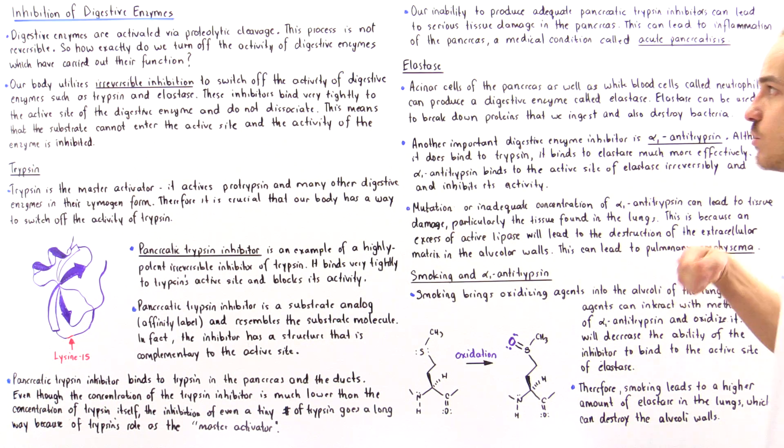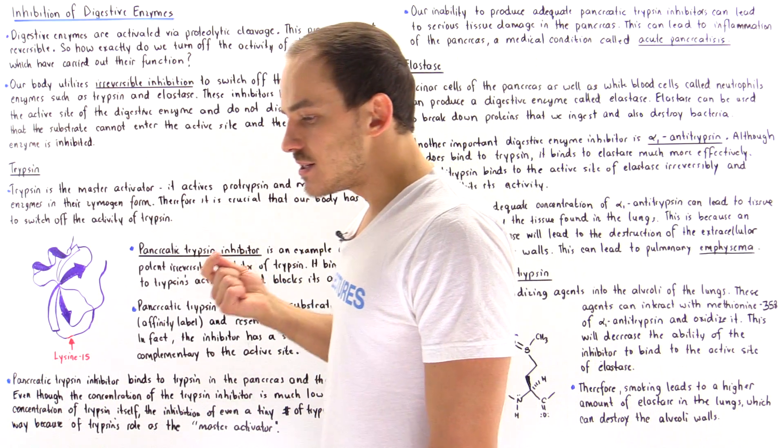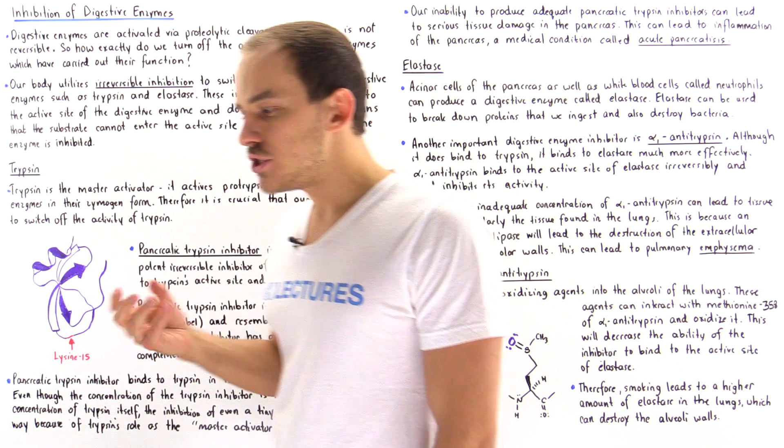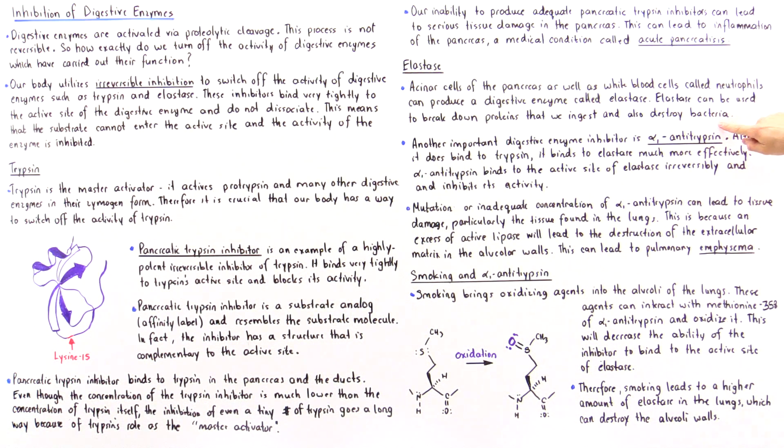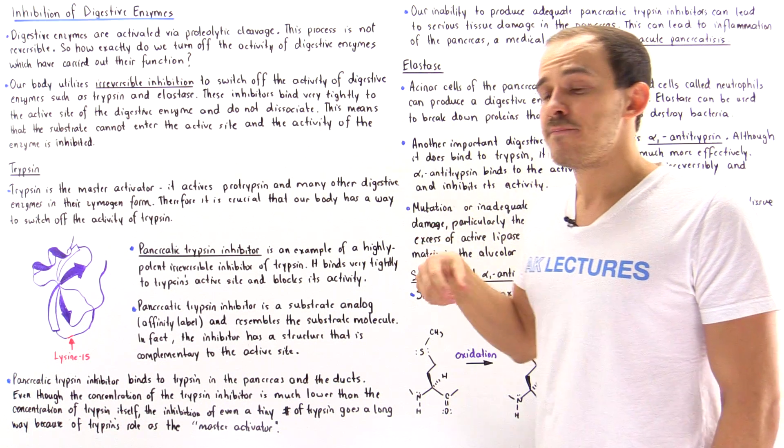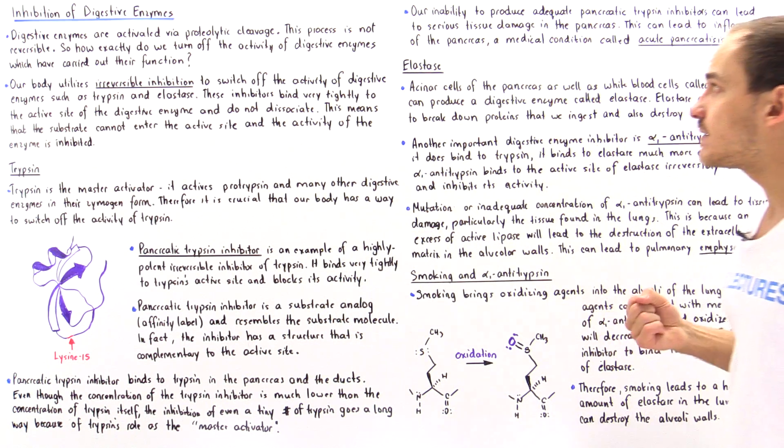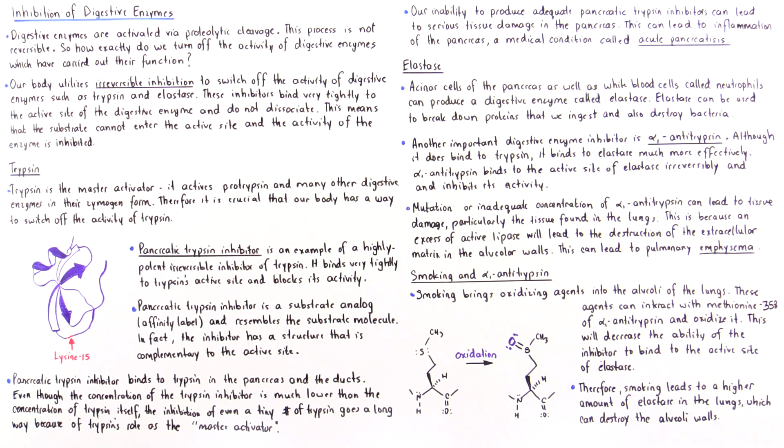And so we see what smoking does is as a result of the presence of these oxidizing agents it changes or mutates the structure of the alpha-1 antitrypsin so that it isn't able to bind to the active side of elastase very well.